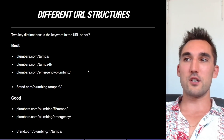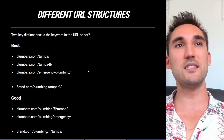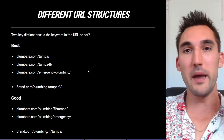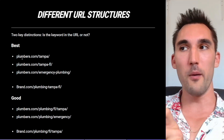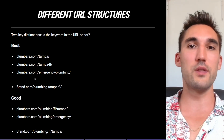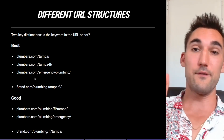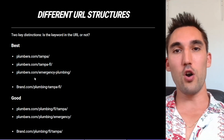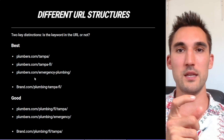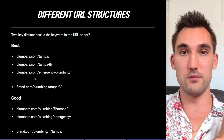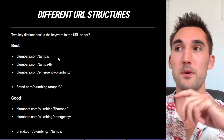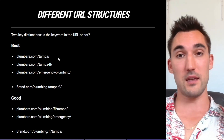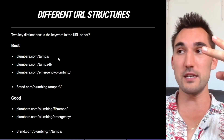There are two key distinctions when it comes to optimizing your URLs: is the keyword in the main domain or not? If you have something like plumbers.com, it's going to be a different rule set than if you have, for instance, your brand.com where your brand doesn't include the word plumbers. So let's say your brand is called pdb.com — you don't have the keyword plumber in there, so you don't have to worry about including it too many times. But if your keyword is like plumberintampa.com or tampaplumbing.com, you need to be careful because you already have that keyword in your domain.